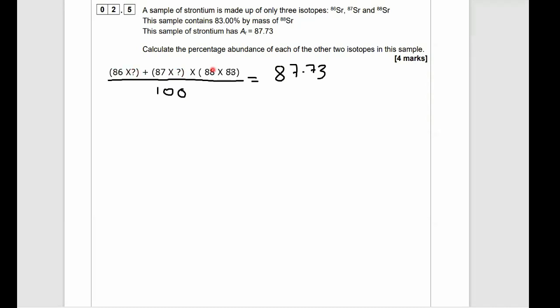However, in this situation, we actually know the RAM. We know the AR of strontium. We just are missing two of the individual isotopes, their abundances. We're missing the abundance of 86 and 87.